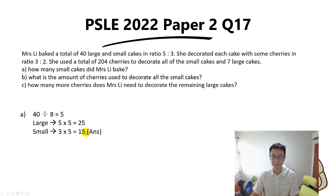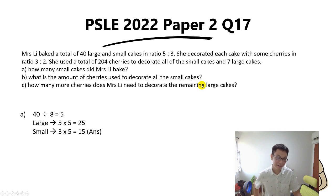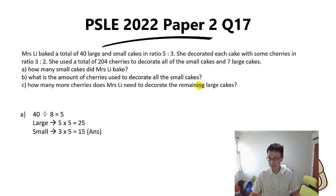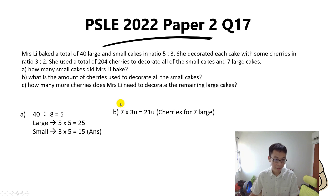For Part B, the question asks for the number of cherries used to decorate all the small cakes. The concept here is 'number bond value.' We use this because we're given the number of cherries used to decorate each cake for large and small in a ratio. We're going to take the number of cakes and multiply by the units for the cherries.